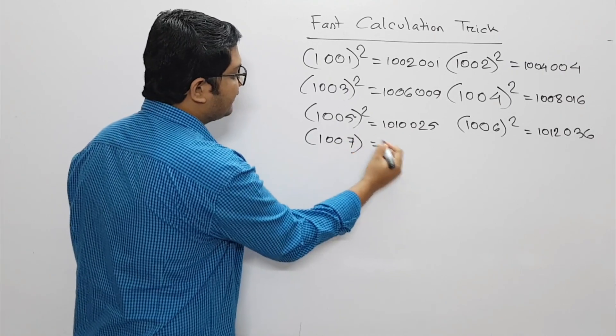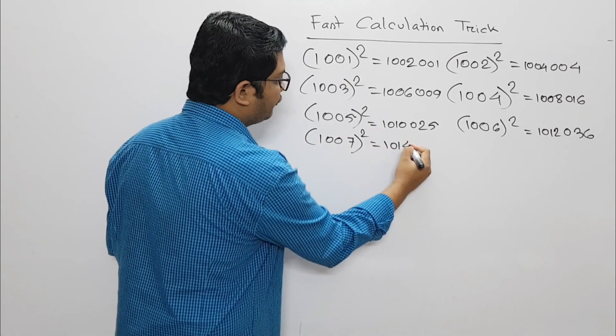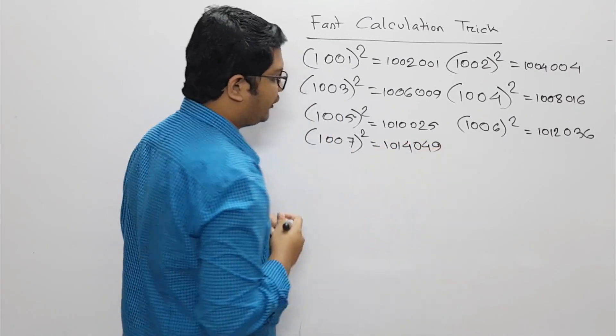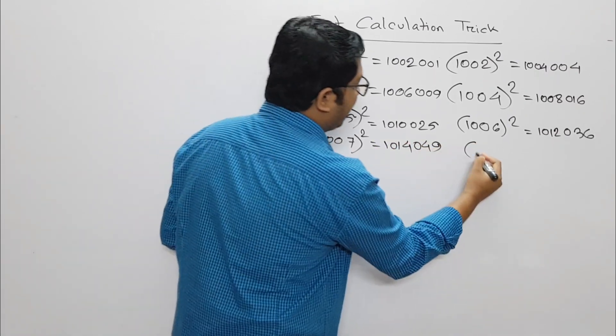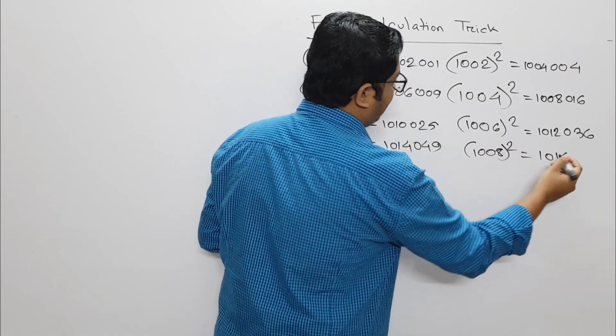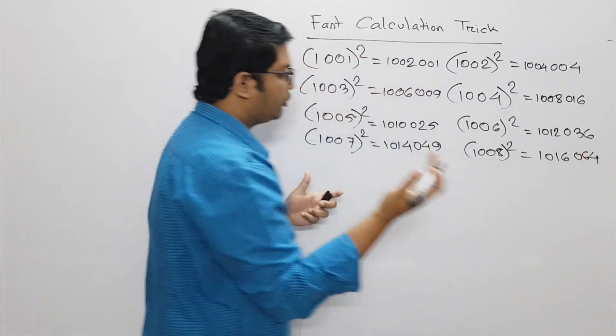1007 squared equals 1014049. 1008 squared equals 1016064. So it's very simple.